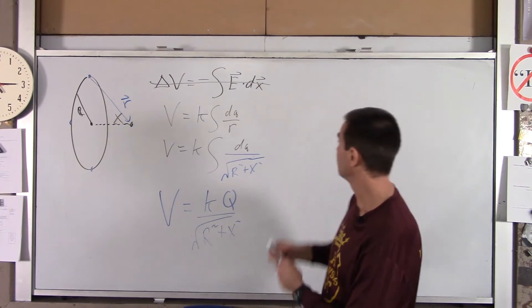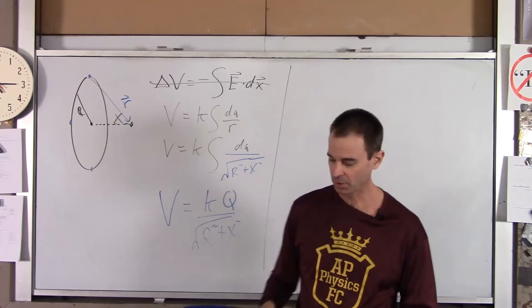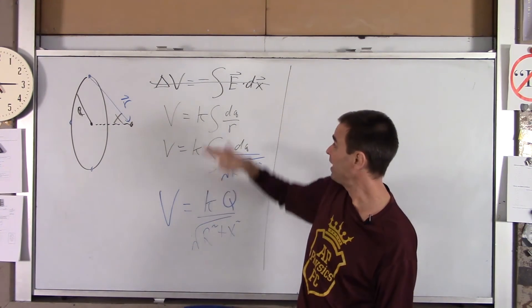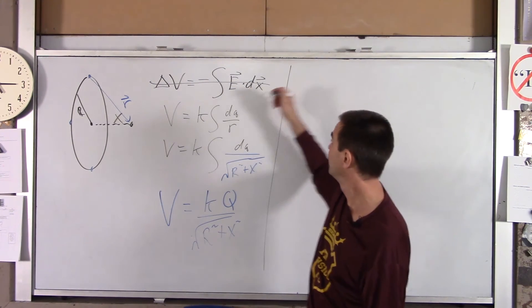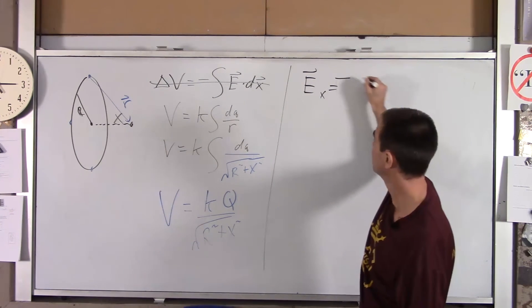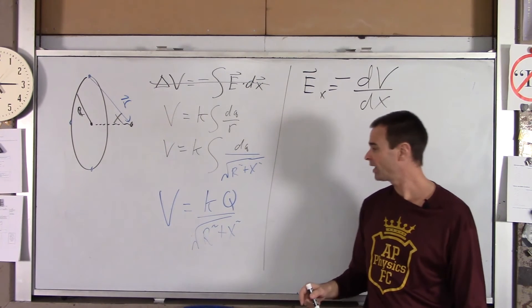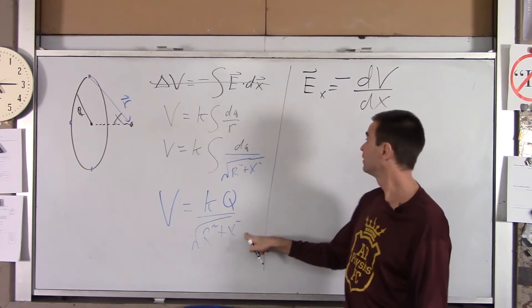Now, the last thing we'll do is, using the voltage, we will determine the electric field created by the ring. Now, we're basically using this, solving for E. E, in the X direction, is negative DV, DX.